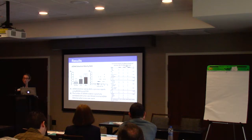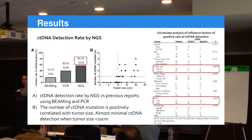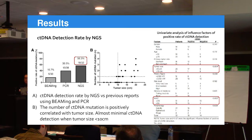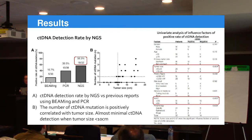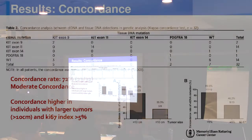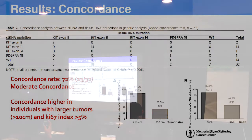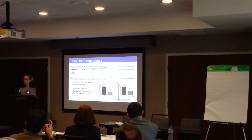On univariate analysis, factors influencing ability to detect ctDNA included tumor size and the Ki67 index — the rate of proliferation within the tumor. The number of ctDNA mutations detected was positively correlated with tumor size greater than 10 centimeters and a higher Ki67 index. Concordance was 72%, rated as moderate by statistical analysis, and was higher in patients with tumors larger than 10 centimeters and Ki67 index greater than 5%.